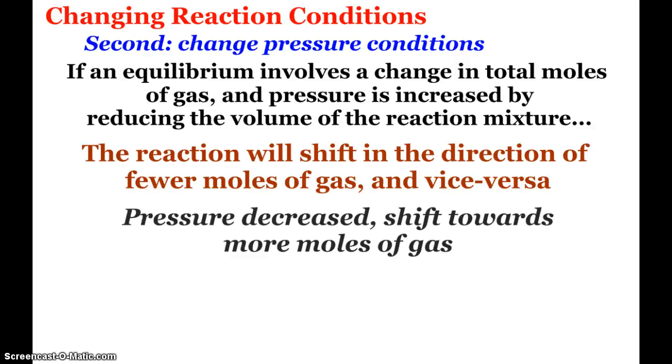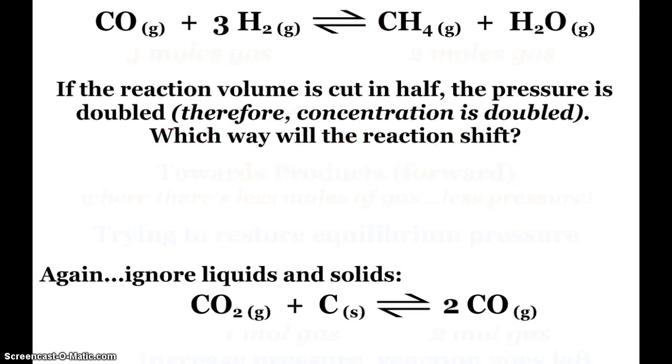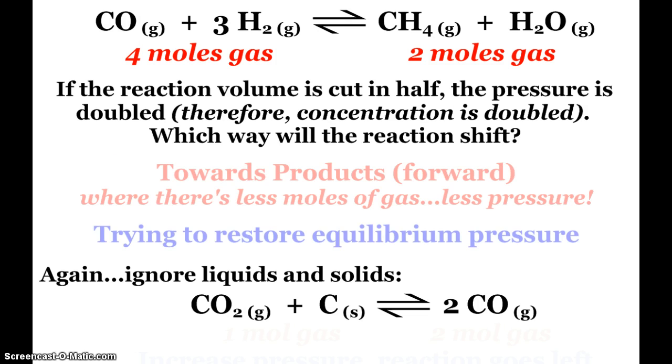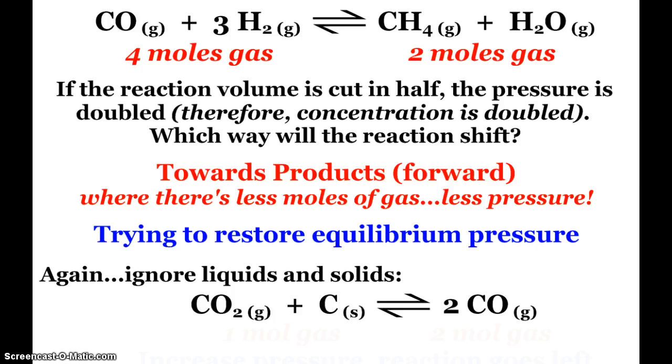That's because where there's more moles of gas, there would be more pressure, more particles, more collisions, more pressure. So if we decrease the pressure, the reaction is going to try and get it back. If we increase the pressure, the reaction is going to try and get rid of it. So again, here we have our methanation reaction. On my left-hand side, there are four moles of gas. On the right-hand side, there are two moles of gas. And so if we were to cut the reaction volume in half, then the pressure is going to double, a.k.a. also the concentration is doubling. For this reaction, it's going to go towards the products. It's going to go in the forward direction where there's less moles of gas, less pressure is existing there. We're trying to restore our equilibrium pressure.